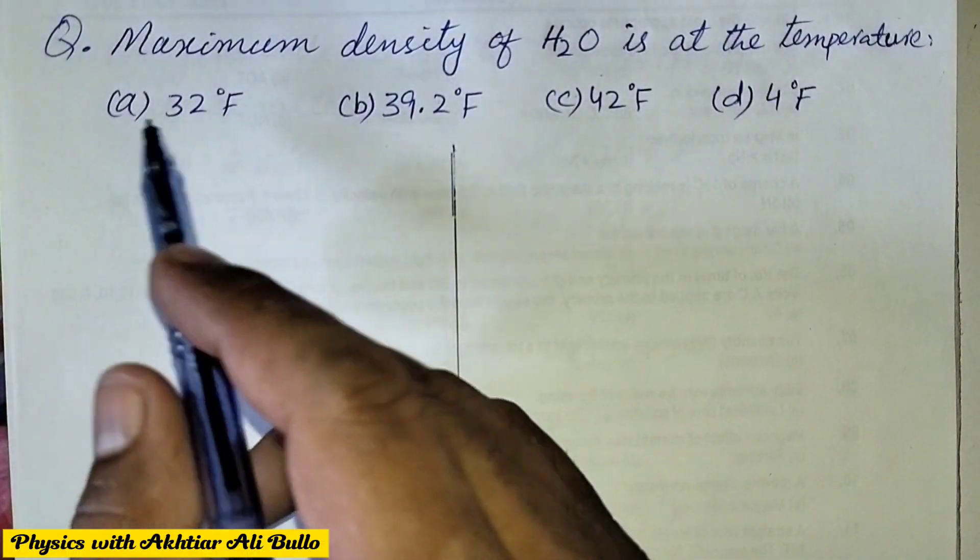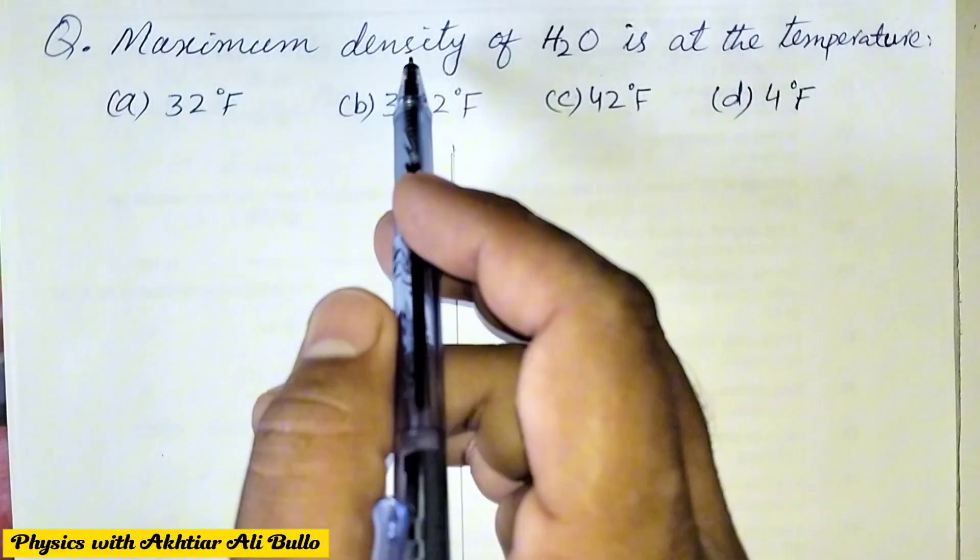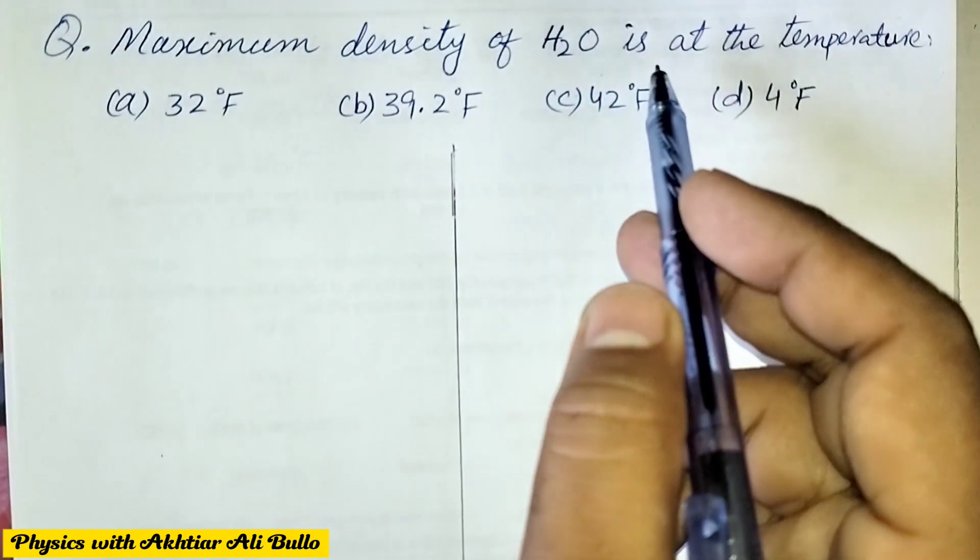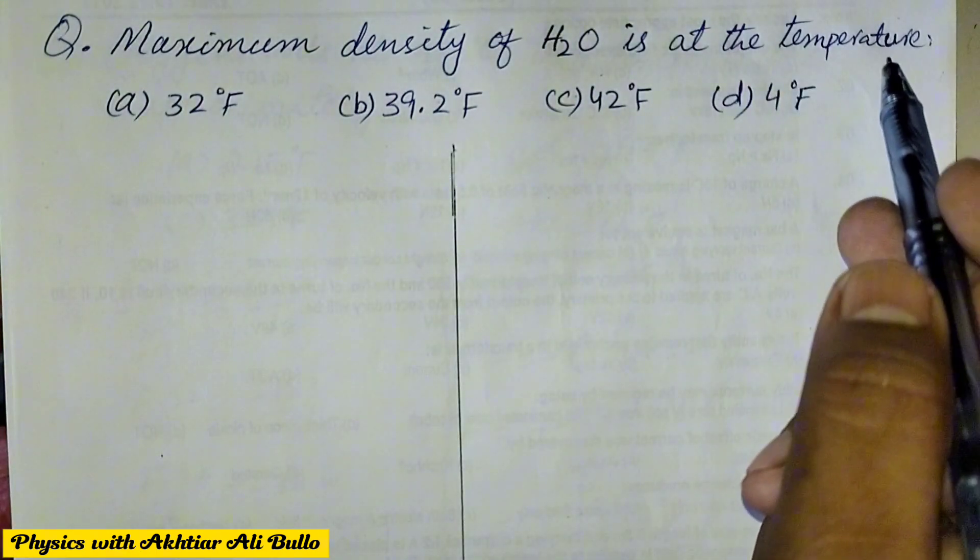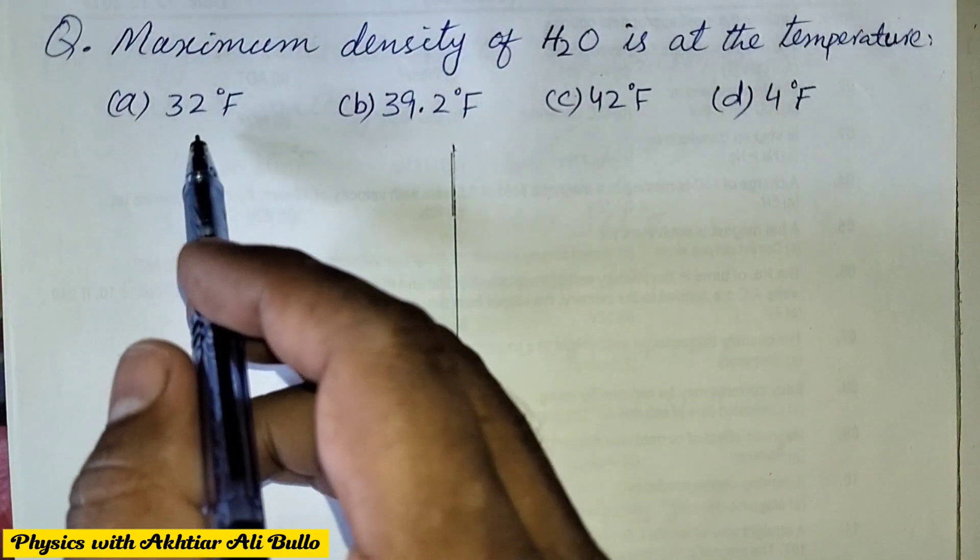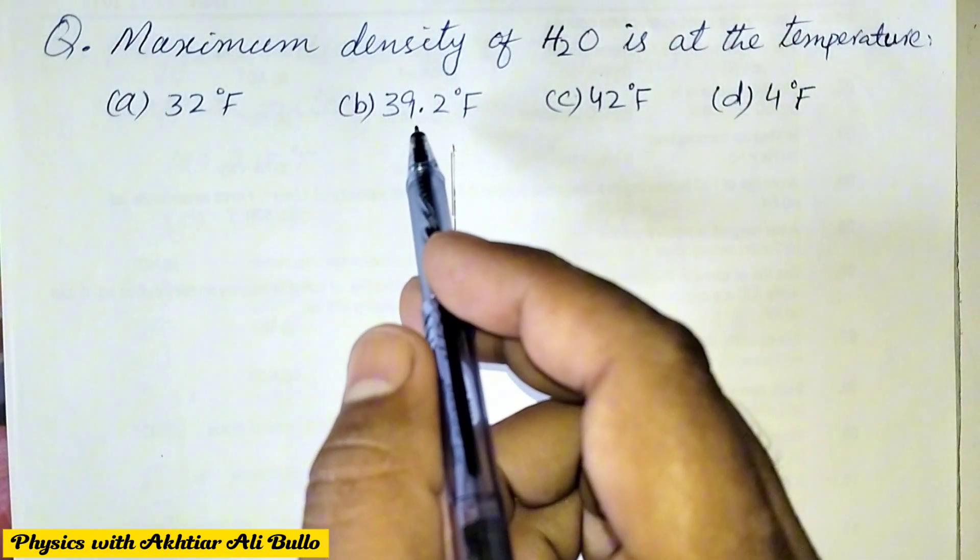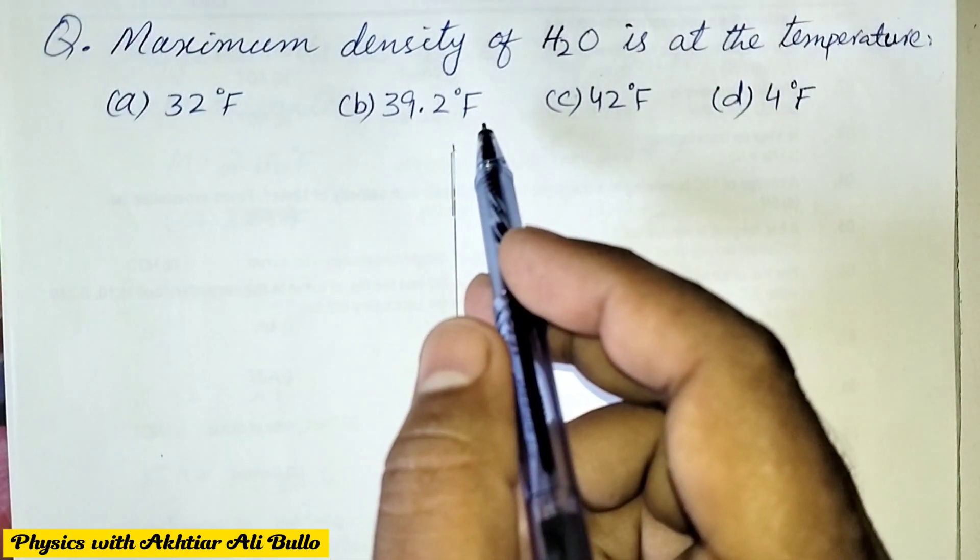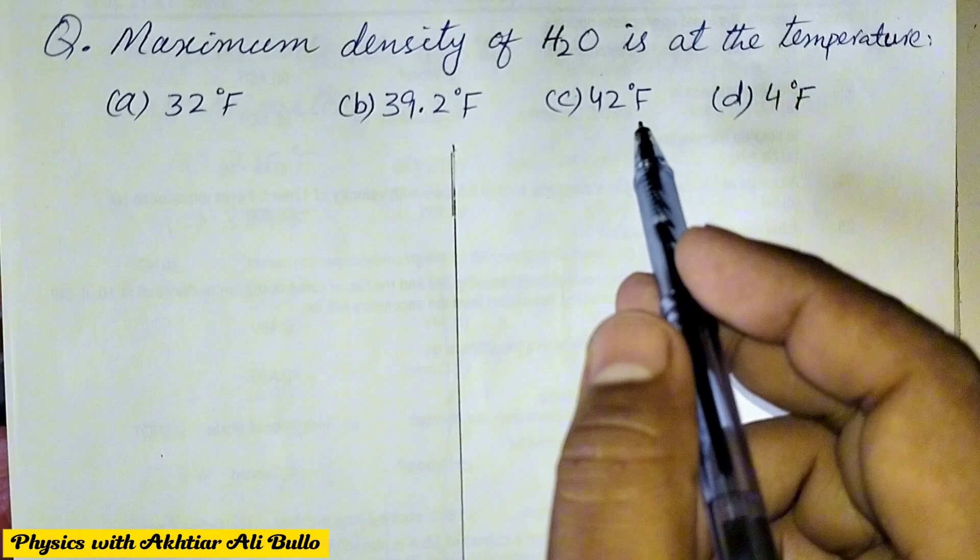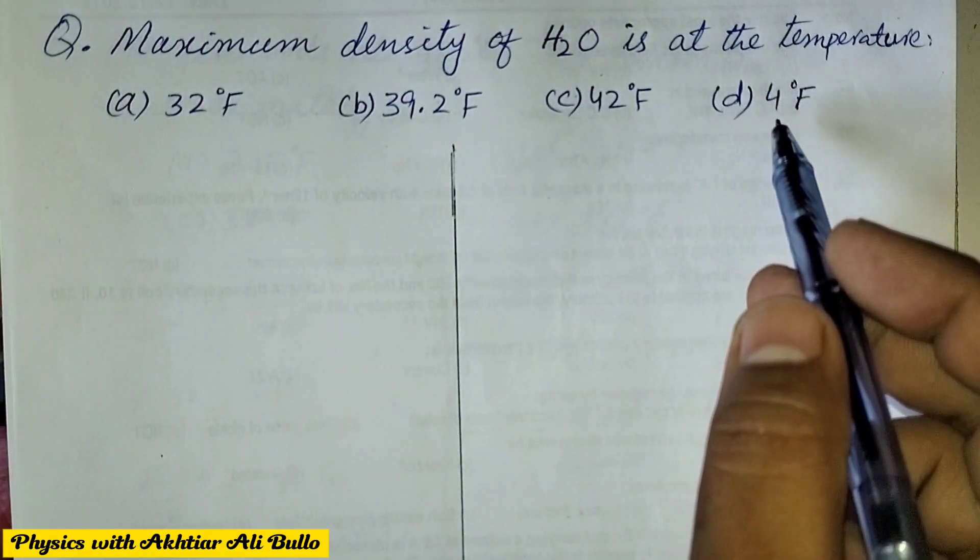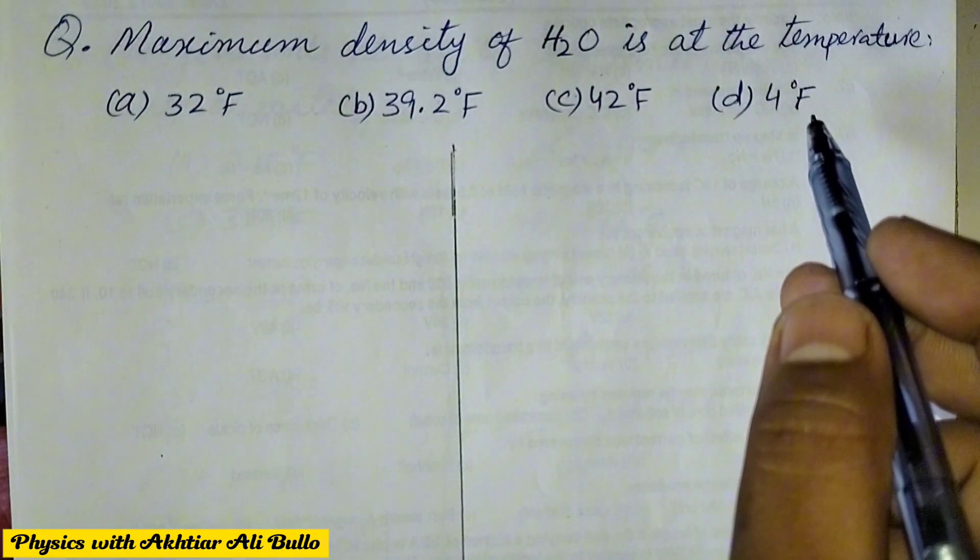The question is, maximum density of H2O is at the temperature: A. 32 degree Fahrenheit, B. 39.2 degree Fahrenheit, C. 42 degree Fahrenheit, D. 4 degree Fahrenheit.